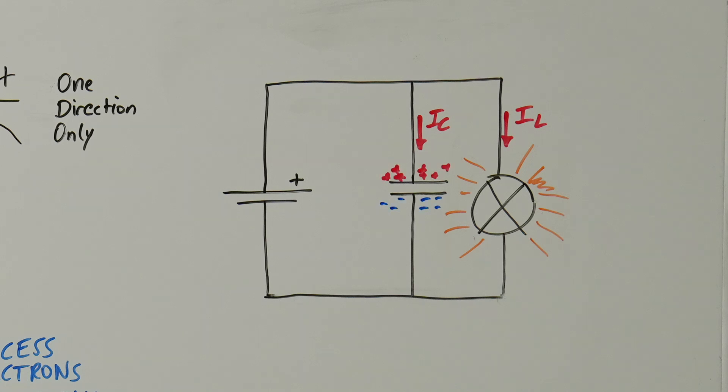When we disrupt the connection to the battery again, the voltage no longer pushes the electrons into the capacitor plates. So the electrons can move from the negative plate to the positive plate and provide the lamp with electrical energy. The lamp will continue to light up until the capacitor plates are unloaded.